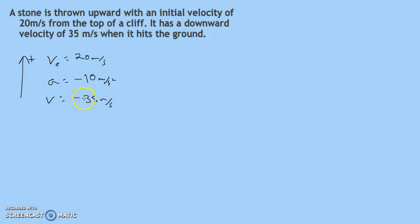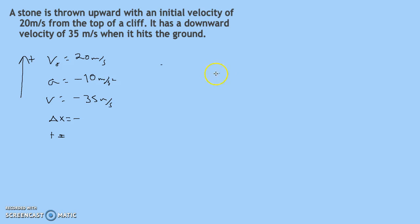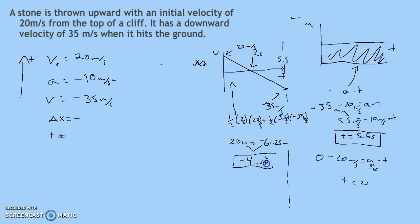Notice the final velocity is negative because it's going downward. Displacement should be negative because we end up below where we started. Go ahead and solve for those missing values. The missing values are: displacement of negative 41.25 meters and a time of 5.5 seconds.